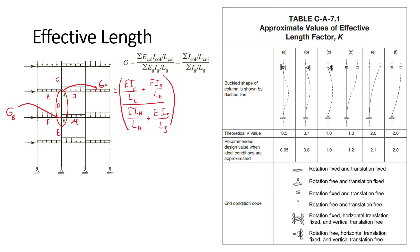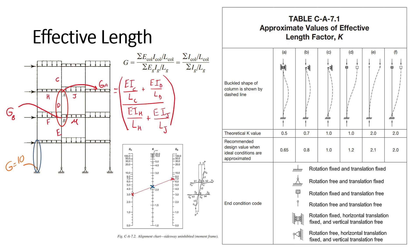By using table C-A-7.2 in the AISC specifications, we can use the computed values of G-A and GB to draw a straight line between them. The point at which the line intersects the middle column is the computed value of K. To use the same method for the lower columns, the value of G at pin support is recommended to be taken as 10, while it is recommended to be taken as one for fixed supports. If the frame is braced, then use table C-A-7.1 to compute K.